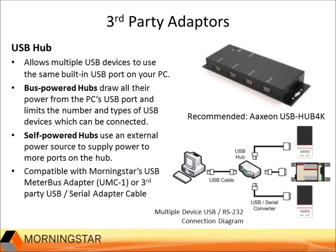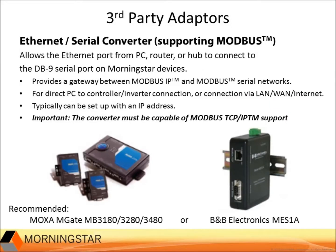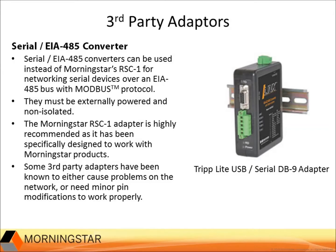A USB hub can be used for making a USB PC connection to multiple RS-232 devices. Besides using the TriStar MPPT-60 as an Ethernet bridge to an EIA-485 network, there are third-party products available for making an Ethernet connection to RS-232 and EIA-485 inputs. There are also third-party alternatives to Morningstar's RC-1 serial to EIA-485 adapter. However, the RC-1 is guaranteed to work with Morningstar products.